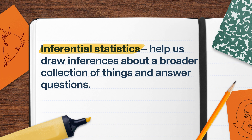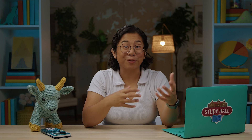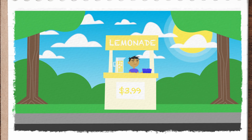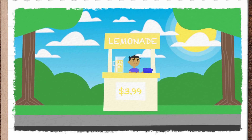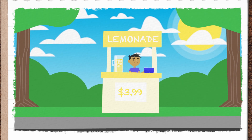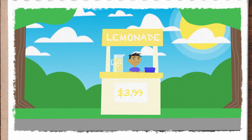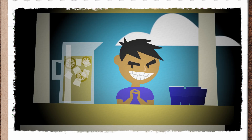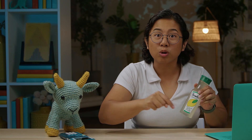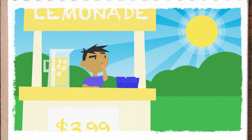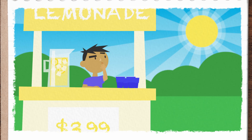Inferential statistics help us draw inferences about a broader collection of things and answer those vital questions. We can get a feel for inferential statistics by considering Benito, the most enterprising middle schooler in his neighborhood — a cutthroat capitalist on a citrus mission. Right now he's just got one sidewalk lemonade stand, but he's got big plans for a lemonade empire. He needs to figure out exactly what moves lemonade and how to improve his sales to take down big juice — namely, the juice bar down the street. Benito notices that when temperatures rise, he seems to sell way more cups, and he wants to estimate the precise relationship between temperature and lemonade sales.